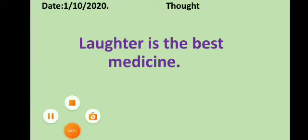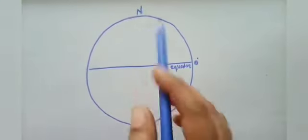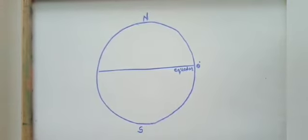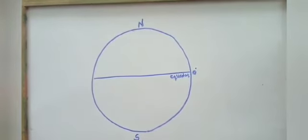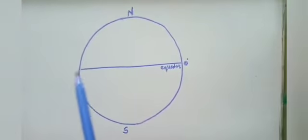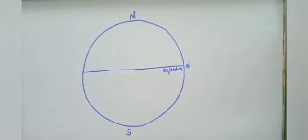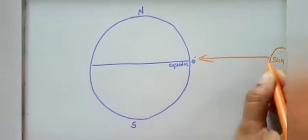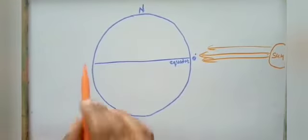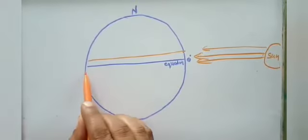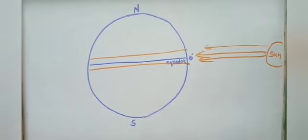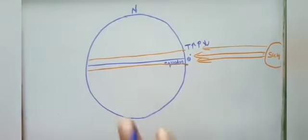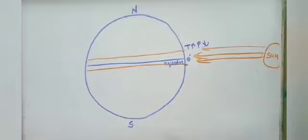Let us consider this Earth. This is the equator — we know that the equator divides the Earth into the northern hemisphere and southern hemisphere. At the equator, the sun rays are perpendicular. The equatorial region receives perpendicular sun rays, hence this part is hot most of the time of the year. Because of this high temperature, pressure is low.